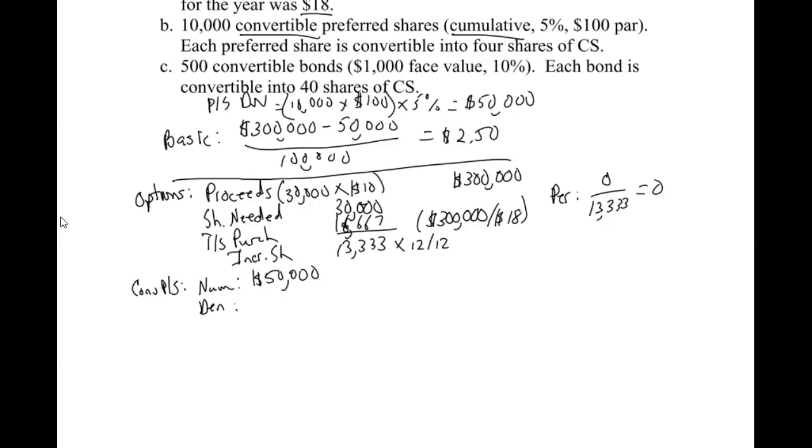The denominator says each share is converted into four. So we have 10,000 preferred shares times four. So that's going to be 40,000 shares. And technically, if you want to multiply that times 12 twelfths, you can. So the per share, I'm just going to write this over here just so I have enough room for everything, is going to be the $50,000 over the 40,000.